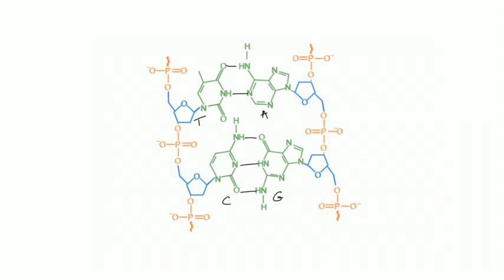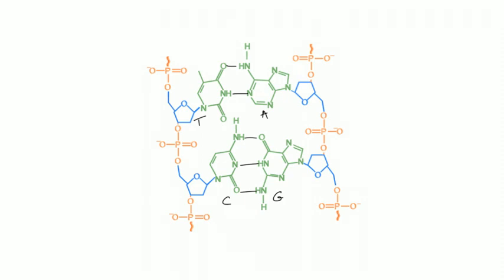Let's briefly mention where the ingredients come from to make purines — adenine and guanine. You need the amino acids glycine, glutamine, and aspartate. You don't need to know where each specific carbon and nitrogen comes from, but it is worth knowing those three amino acids are used in the making of purines, along with the vitamin tetrahydrofolate.